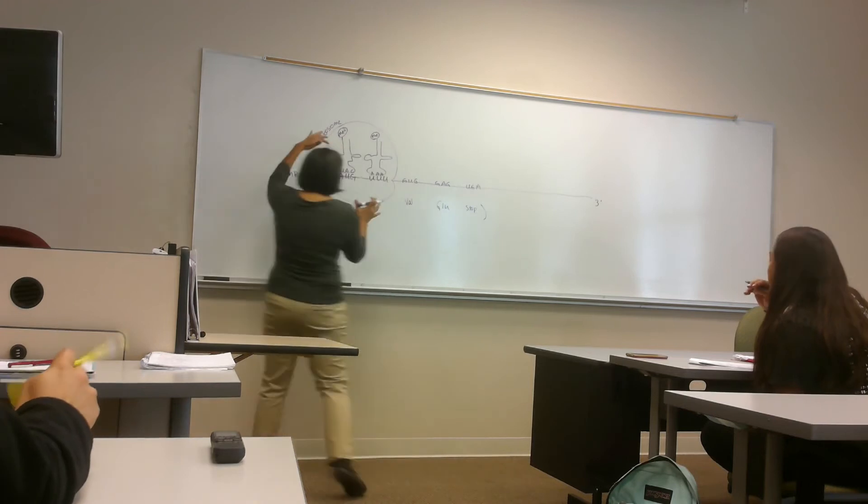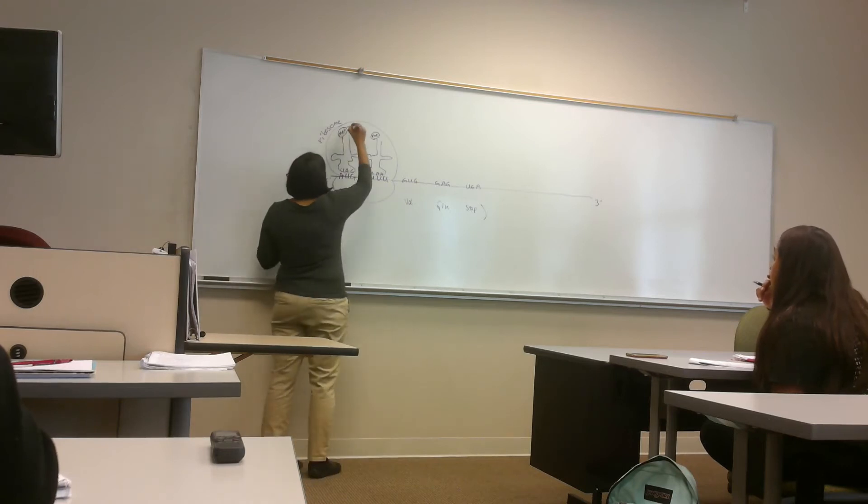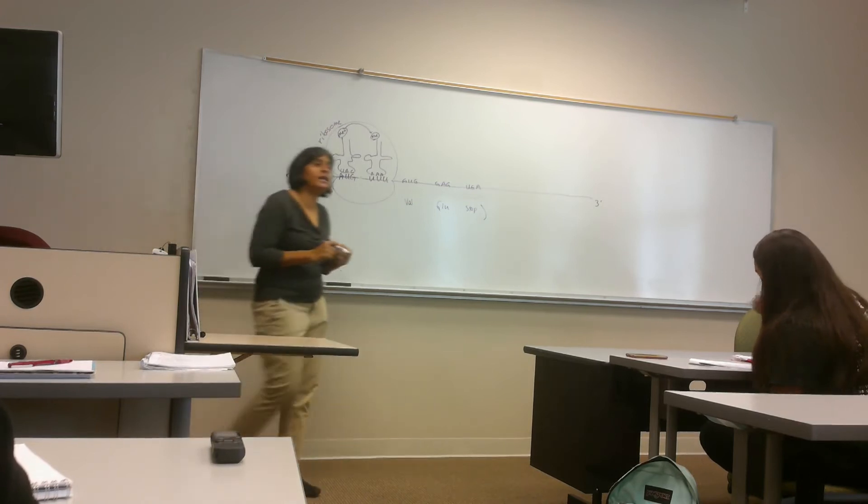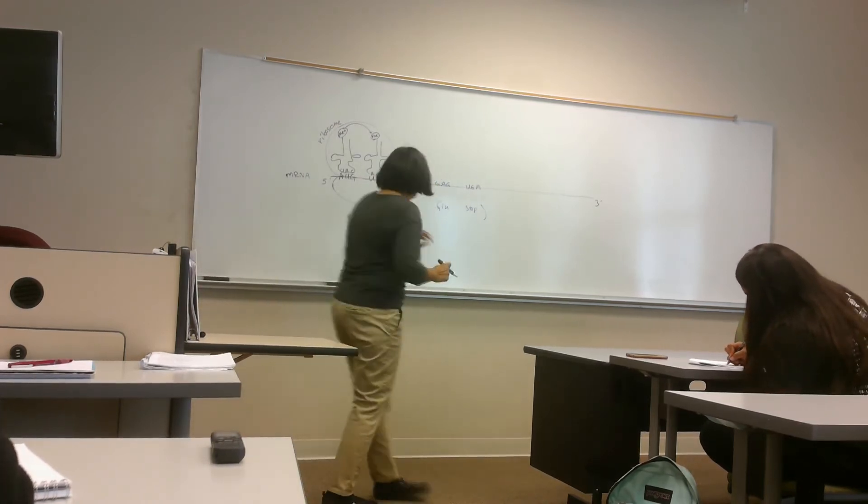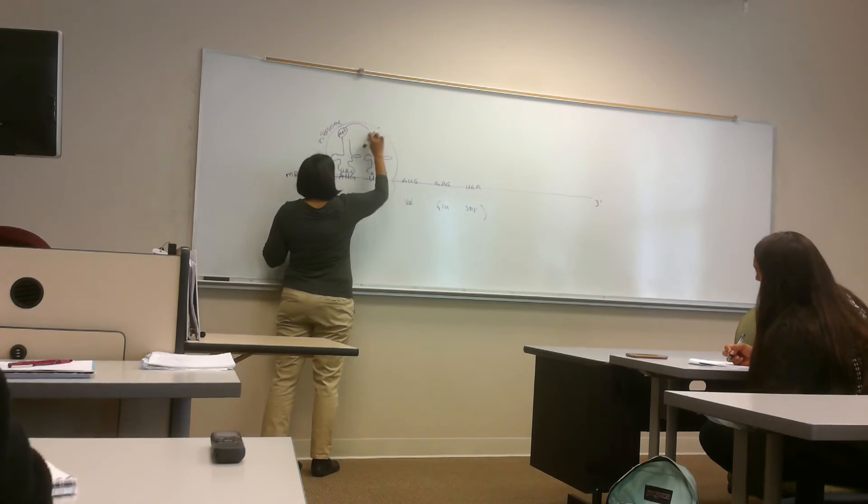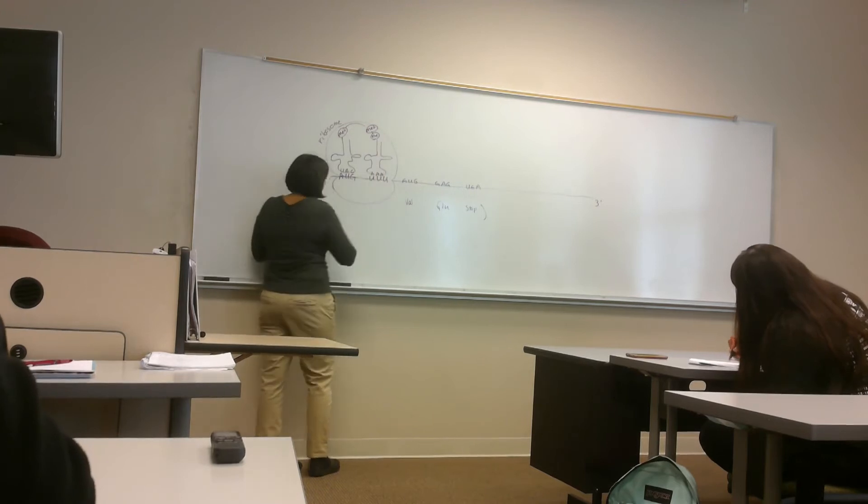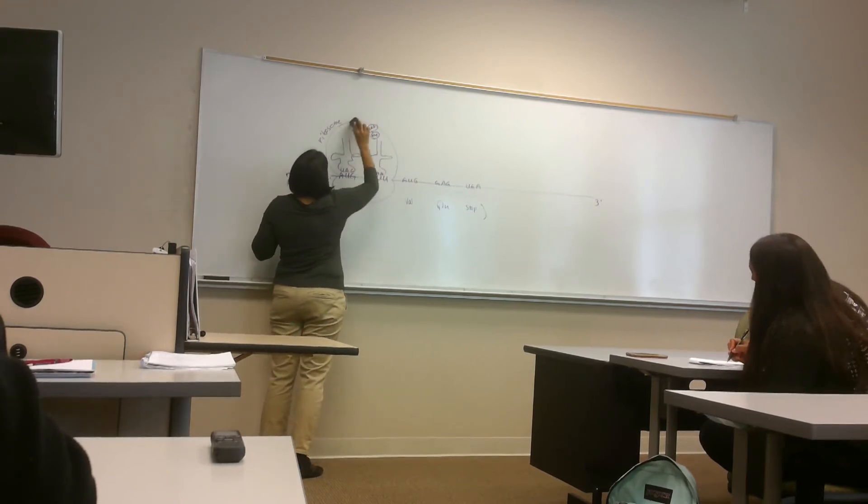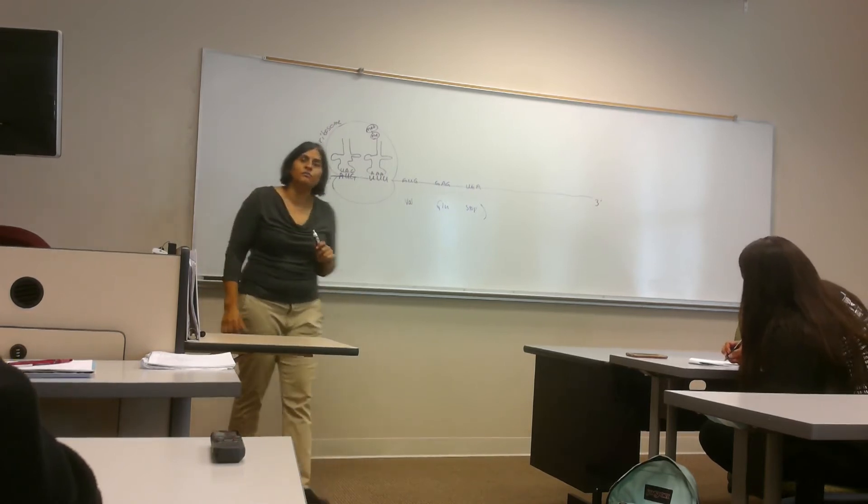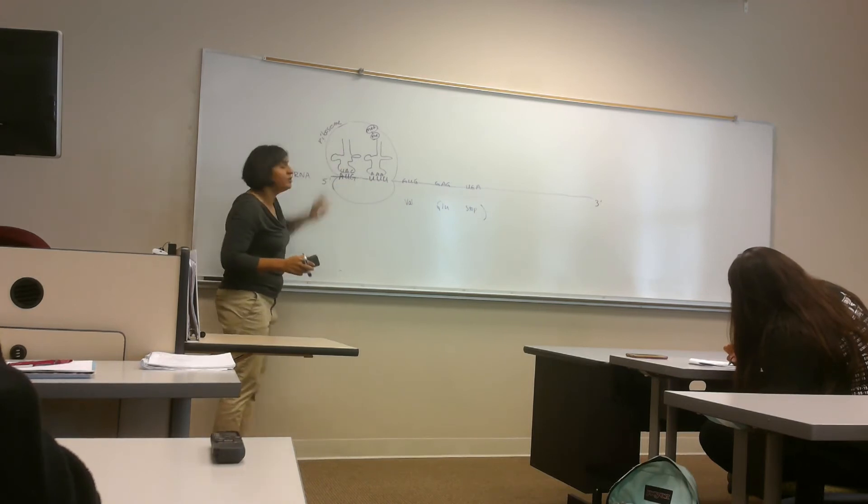Now, the ribosome does the chemistry to move this amino acid here and to create a peptide bond. Okay? So, the ribosome does the chemistry to move methionine and bind that amino acid alanine and create a peptide bond. Now, you have the peptide. So it's been moved. So now, two amino acids joined. This tRNA is now empty. So it goes away.